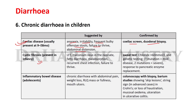Cystic fibrosis presenting in infancy is suggested by meconium ileus in the neonate, fatty diarrhea, malabsorption, recurrent chest infections, and failure to thrive, confirmed by sweat test showing chloride above 60 mmol/L and genetic testing — one mutation indicates mild disease, two mutations severe disease — with response to pancreatic enzyme replacement. Inflammatory bowel disease in adolescents presents with chronic diarrhea, abdominal pain, weight loss, right lower quadrant mass, and mouth ulcers, confirmed by colonoscopy with biopsy and barium studies showing skip lesions and string sign in Crohn's, or loss of haustrations, mucosal edema, and ulceration in ulcerative colitis.